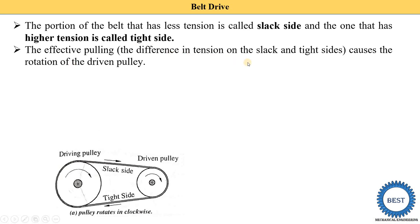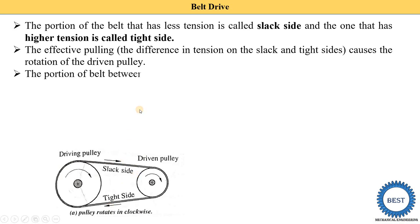The effective pulling — meaning the difference in tension between the slack side and the tight side — causes the rotation of the driven pulley. The forces are different on the tight side and slack side, and this difference is called the effective pull, which causes the driven pulley to rotate.